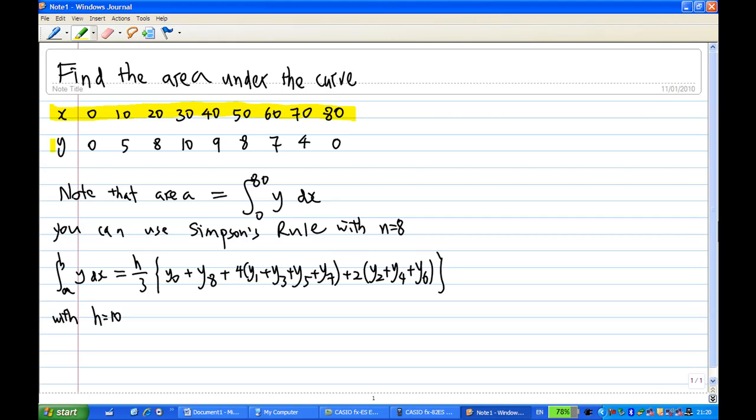We're going to find the area under the curve. Now, in order to find the area under the curve, usually we'll do the integration. So, integration from A to B, A is 0 now, B is 80, integrate Y with respect to X. Now, this can be estimated using Simpson's rule. In this case, we have N equal to 8.